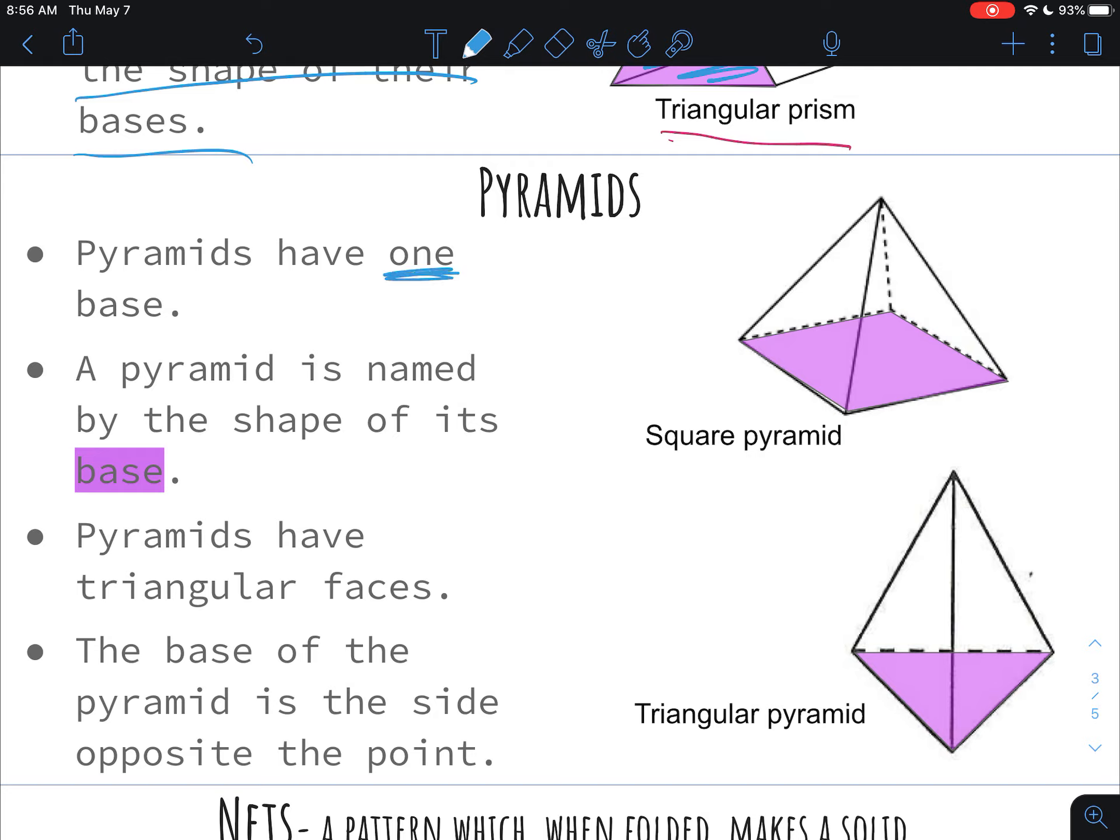But then you also made two pyramids, so pyramids only have one base. So you made a square pyramid and a triangular pyramid. The base is, I always like to think the base is what it kind of sits on. So in the square pyramid, the base is just the square bottom that it sits on. In the triangular pyramid, it's the triangular side that it sits on. So once again, a pyramid is named after the shape of its base. Obviously a square pyramid has a square base, a triangular pyramid has a triangle base.